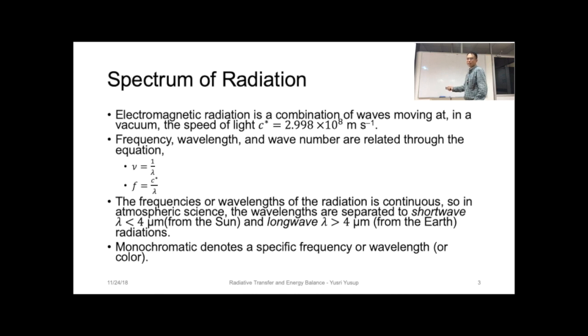The frequencies or wavelengths of the radiation is continuous, so it's not one particular frequency or wavelength. For example, you have a range and there is one particular wavelength at various points.